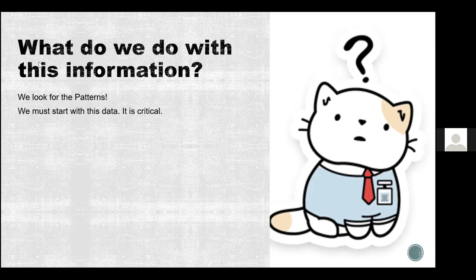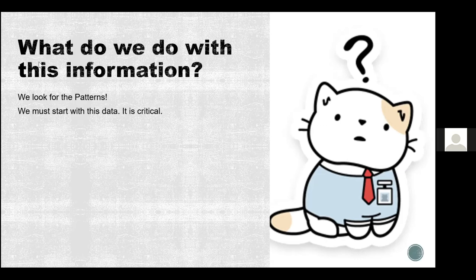Once we have ABC data and know the function — what purpose is this behavior serving, what does it get the child — we look for the pattern. Once we figure out the patterns, we can change the behavior. This is the critical piece. If you start with ABC data collection when a student has a behavior, your opportunities to correct or modify it are much more likely to be successful. There's a ton of research that says we have to start by figuring out why the behavior is occurring, because if we don't know why, we will accidentally feed it or make it worse through the consequences we install.